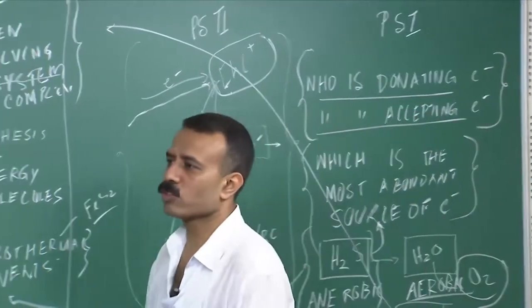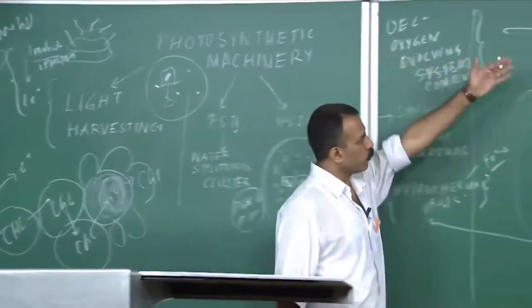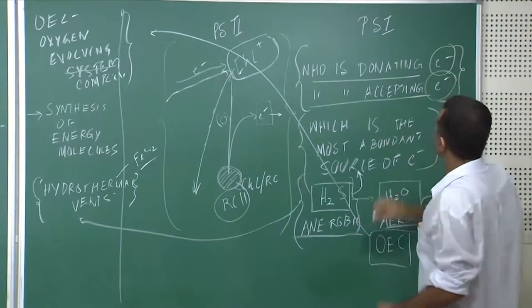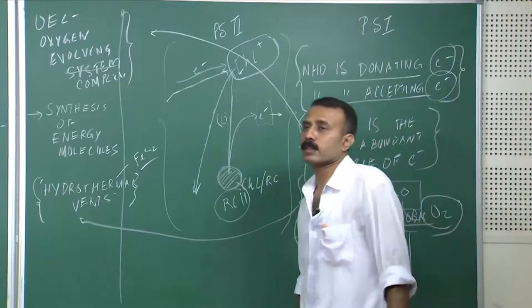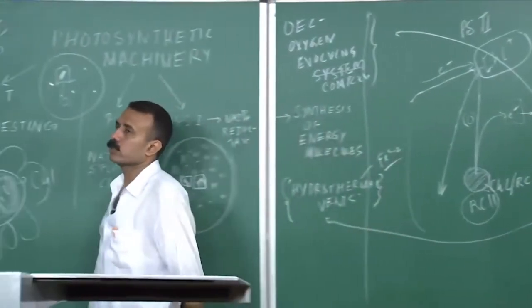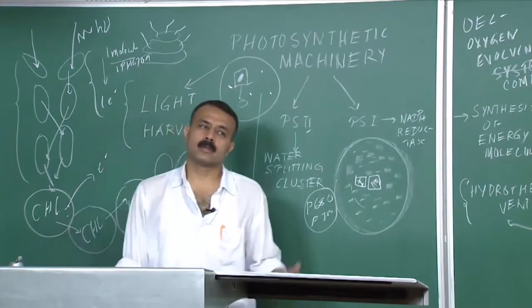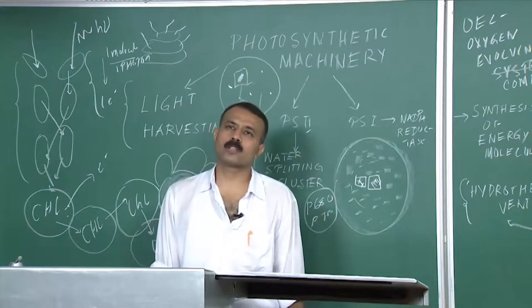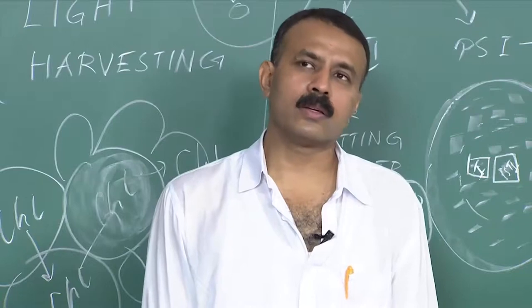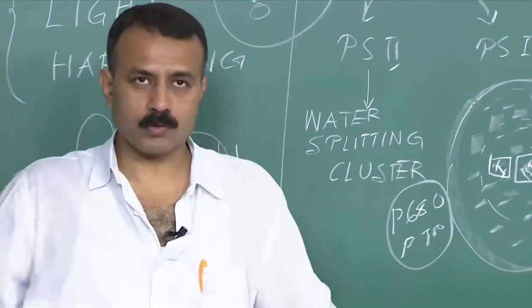Always remember in this whole process there are only three things you have to understand clearly: who is donating electrons, who is accepting electrons, and who is the most abundant source of electrons. We are going to answer these three fundamental questions through photosynthesis. If you see this, this is what mankind is trying to emulate — which will be our next lecture — essentially talking about how we are trying to emulate this electron transport phenomenon, because it is the electron which is the key to all the power we use across the world, apart from fuels.